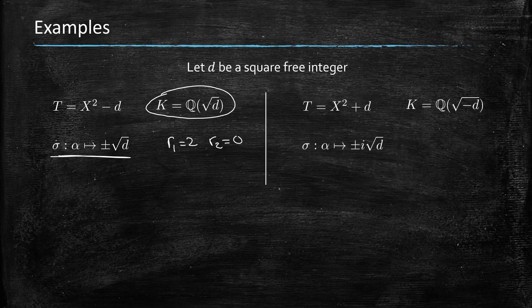Now, their counterpart, the imaginary quadratic fields, they're defined by an equation of the form X squared plus d. And in this case, we're talking about the field that's defined by the square root of minus d, which is complex.